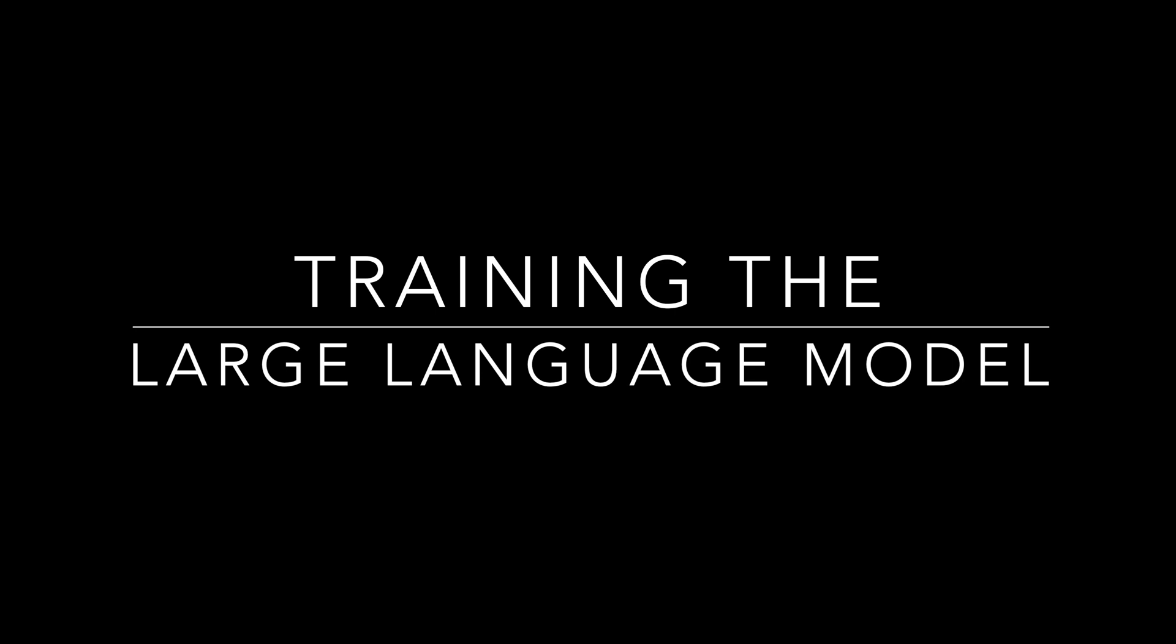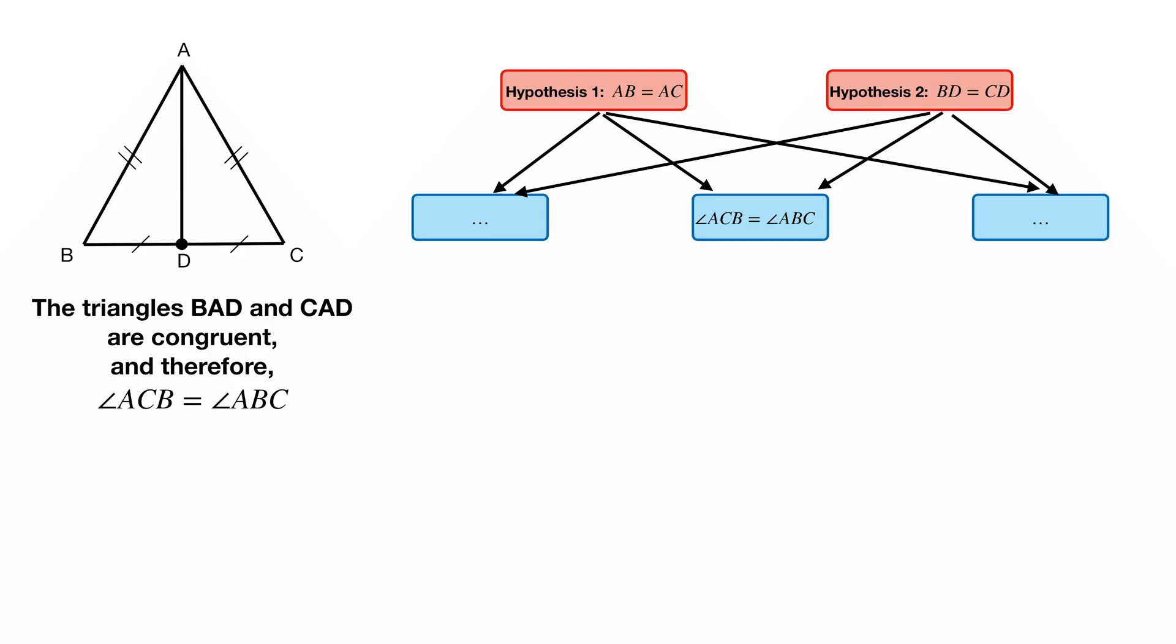Training the large language model. An important feature of AlphaGeometry is that it does not require human-made examples. Instead, it randomly samples a set of hypotheses from an exhaustive list and it uses the symbolic machine to make deductions, thus artificially generating triplets hypothesis-deduction-conclusion that it can learn from. For example, assume that AlphaGeometry has sampled a triangle ABC such that AB is equal to AC and the midpoint D of the segment BC. Then, using the symbolic engine, AlphaGeometry will deduce that the angles ABC and ACB are equal. Therefore, it will learn that one can deduce the blue deduction from the red hypothesis.